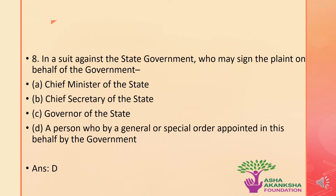Caveat is basically nothing but a notice given by a person informing the court that another person may file a suit or application against him, and that the court must give the caveator a fair hearing before deciding any matter brought before it in the relevant case. In a suit against the state government, who may sign the plaint on behalf of the government? The options are A. Chief Minister of the state, B. Chief Secretary of the state, C. Governor of the state, or D. A person who by a general or special order is appointed in this behalf by the government. The correct answer is option D.